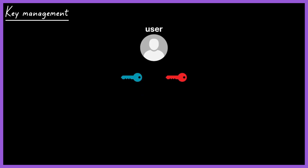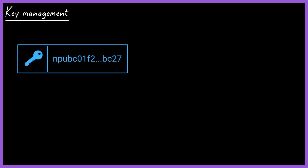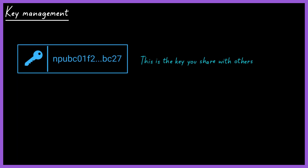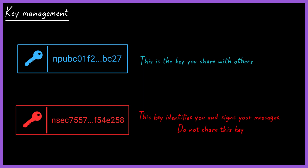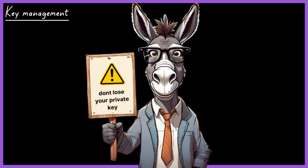To use Nostr, each user needs an asymmetric key pair: a public key and a private key. Most Nostr clients automatically generate these keys when you create a new account. The public key is the one you share with others so they can find you on the network. The private key identifies you and signs your messages — do not share this key with anyone and keep it in a safe place. Think of the public key as your username, something you share freely, while the private key is like a password, but with a crucial difference: if you lose your private key, it's impossible to recover it, and you'll lose access to your Nostr account. If someone else gains access to your private key, they will have total control over your account, so it's essential to keep it in a secure place.